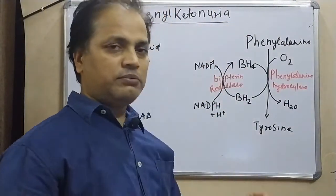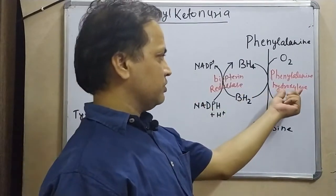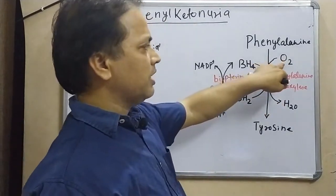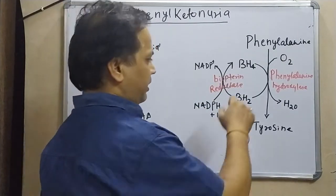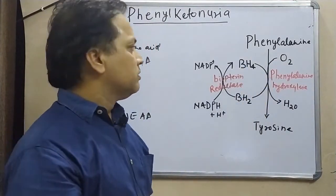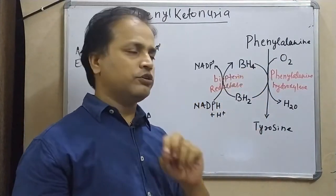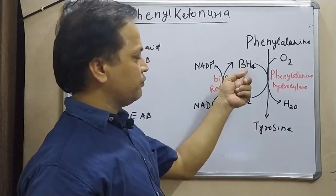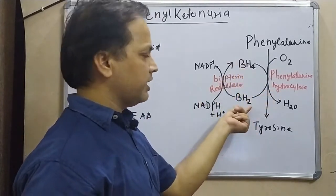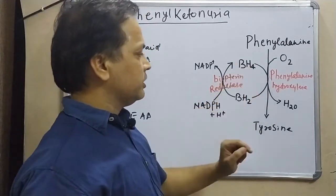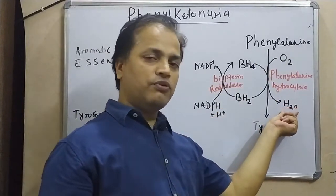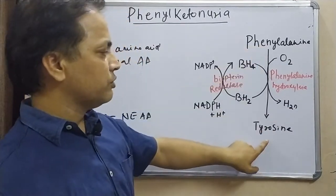Phenylalanine is converted into tyrosine by a specific enzyme called phenylalanine hydroxylase (PAH). This enzyme utilizes one oxygen molecule (O₂) and also requires a cofactor called tetrahydrobiopterin (BH4). The BH4 is reduced to dihydrobiopterin (BH2), and using 2 hydrogens and 2 oxygens, water is produced while phenylalanine is converted into tyrosine.